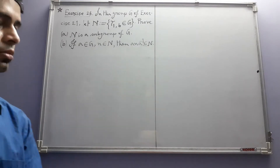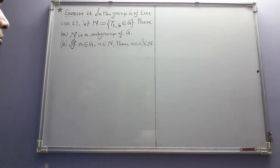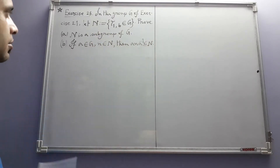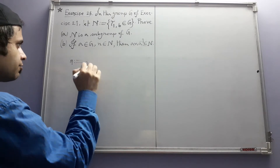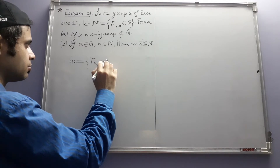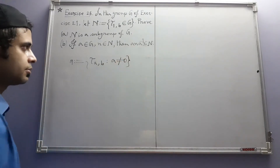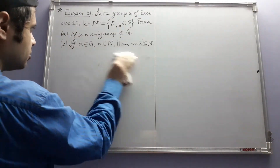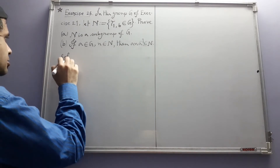Exercise 23. We were looking at the group from exercises 21 and 22. In that group, we define a subset. That group was defined to be the set of all functions of the form tau(a,b) where a is nonzero, forming a group under composition. Now in this group, we consider the subset N consisting of those functions where the first real number is 1. Since 1 is nonzero, N is a subset of G, and we have to prove it is a subgroup of G.